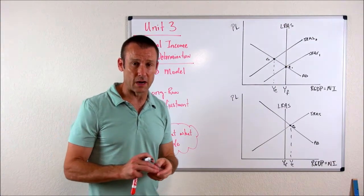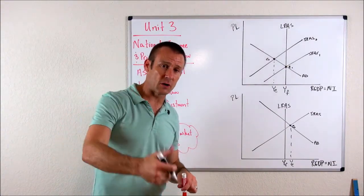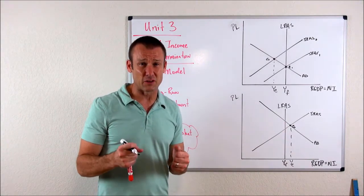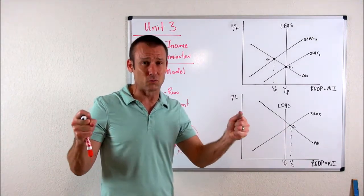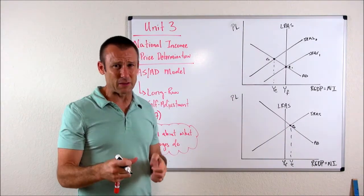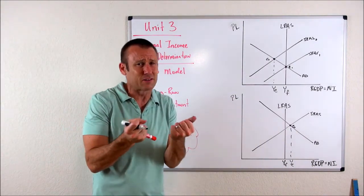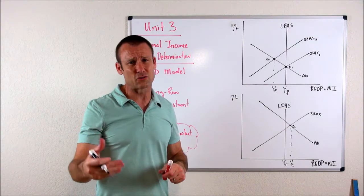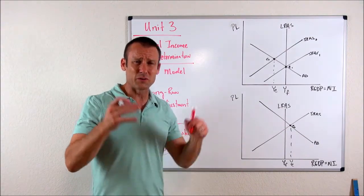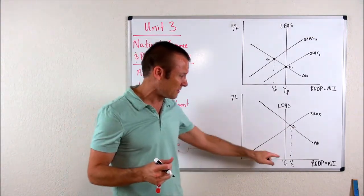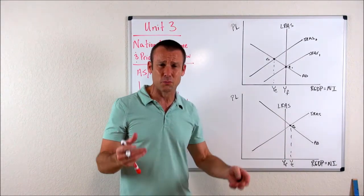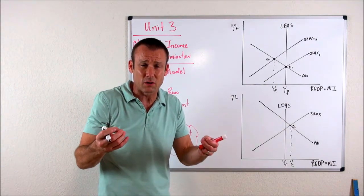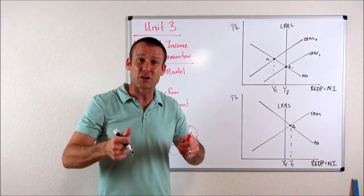Now this one, the booming economy. Well, when we start dipping into the frictionally and the structurally unemployed because there's no cyclically unemployed out there, what the labor market is going to do is it's going to get what we call really, really tight. Now you don't have to think too much about that word. All I'm really trying to say is there's just a scarcity of workers out there. Like I said, there's no cyclically unemployed and we're trying to dip into the frictional and the structural and that's hard to do. So we just don't have very many workers out there and businesses are trying to produce more.